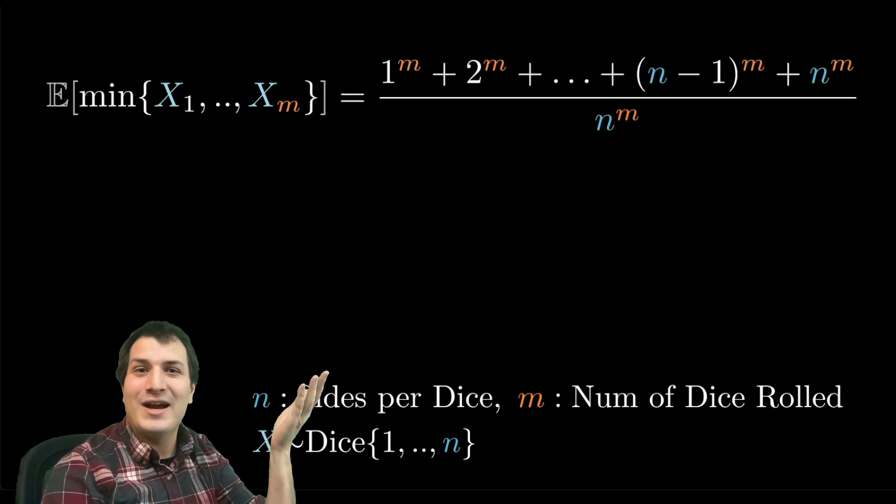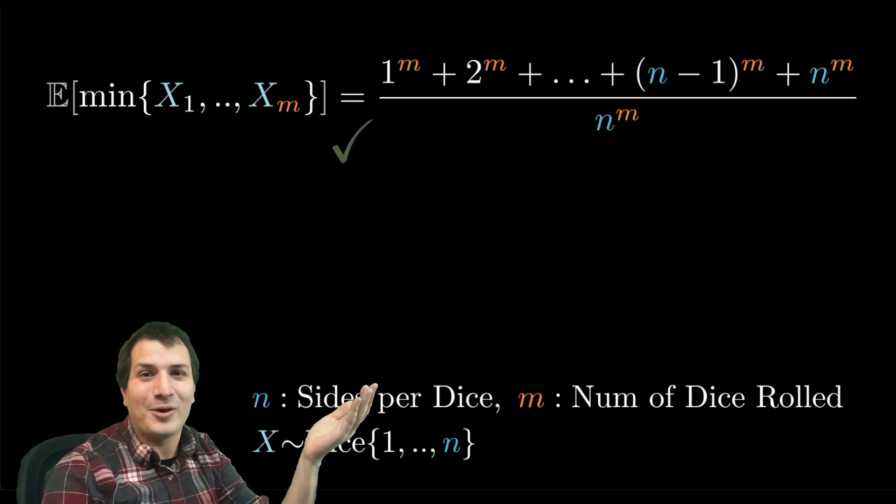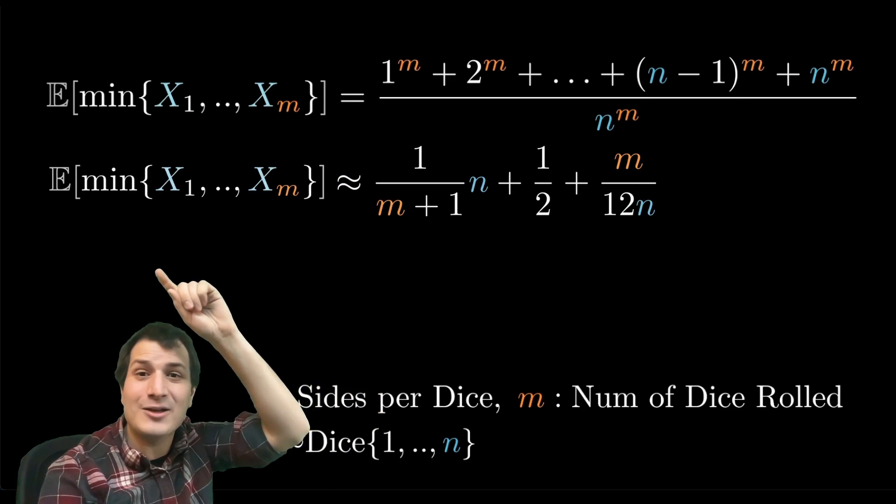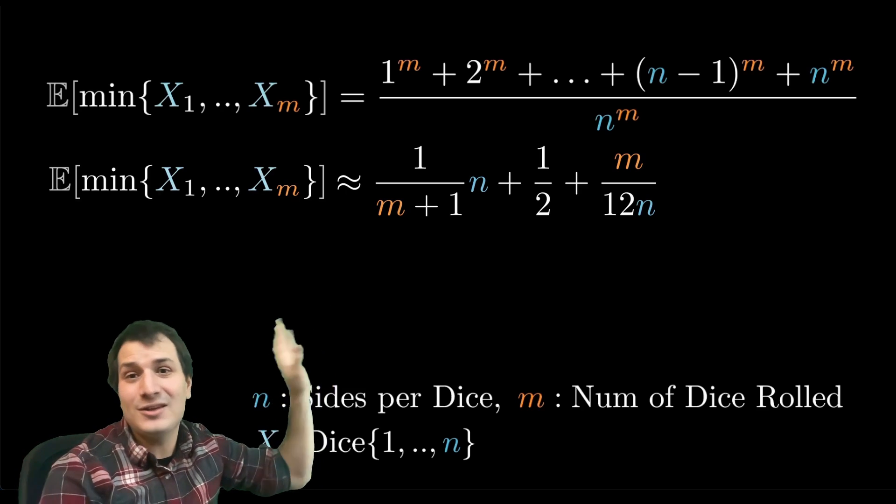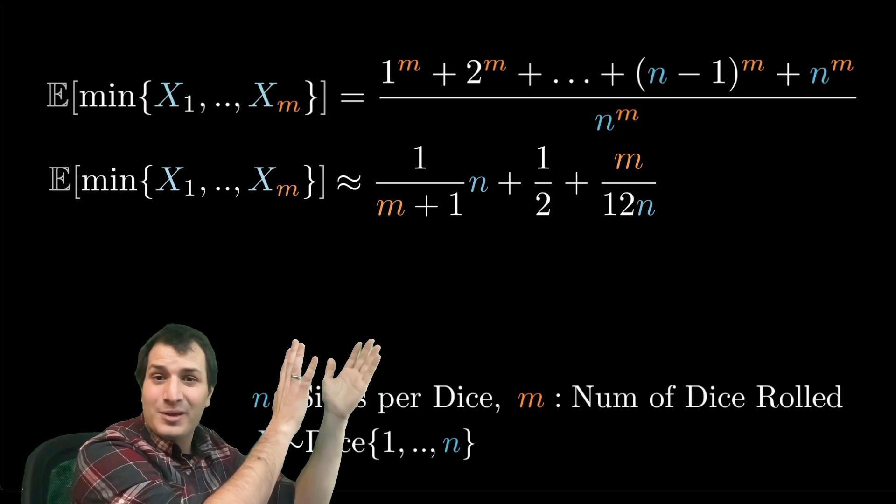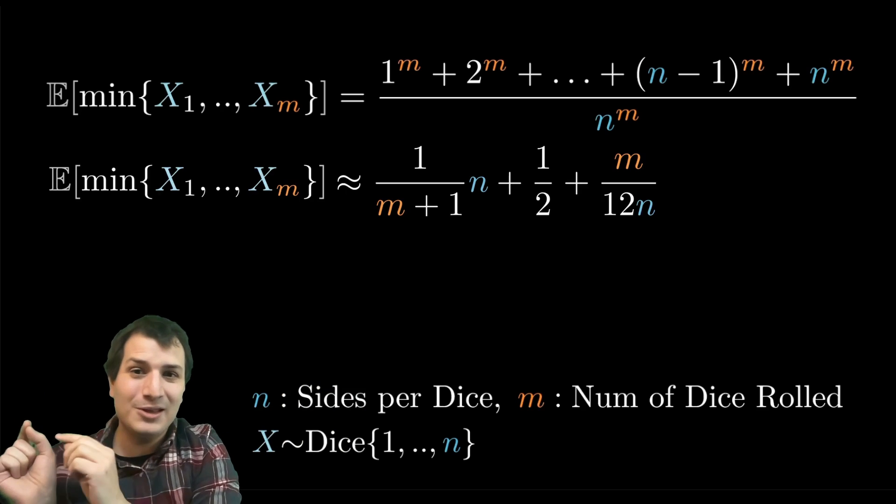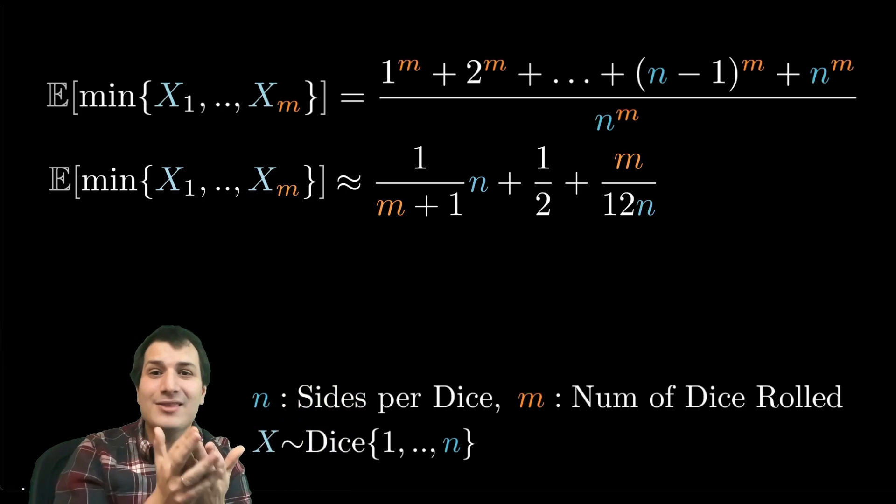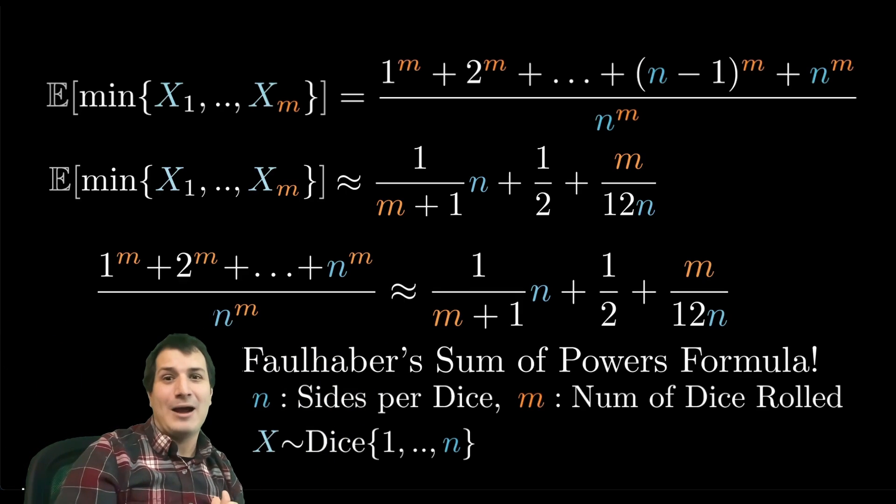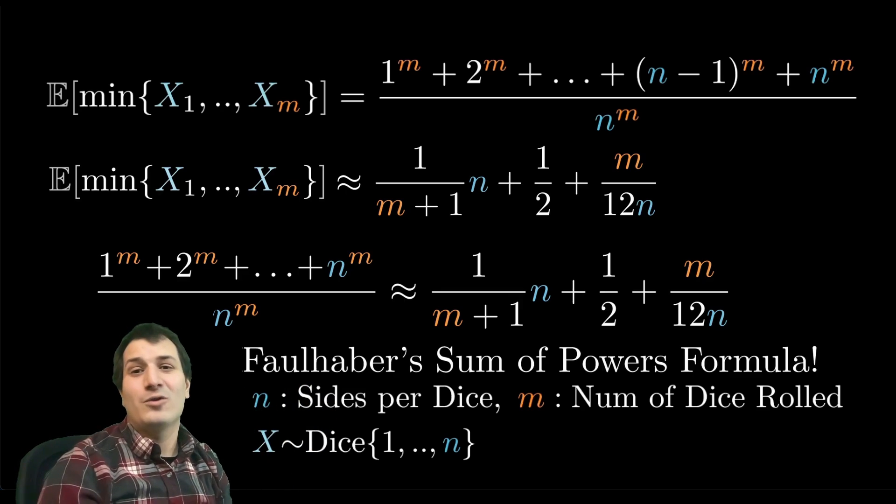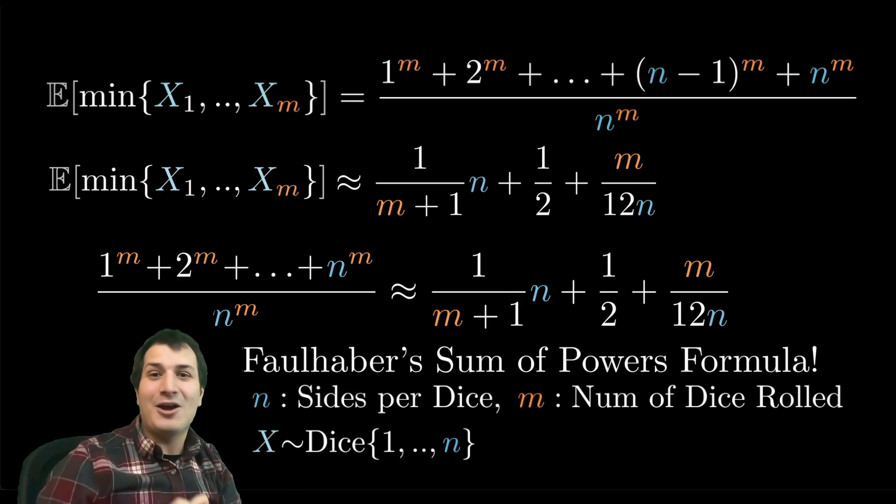We've got the formula. In a separate video, I found a really nice approximation for the expected value of the minimum of dice that has nothing to do with this. Because we have this formula which is an exactly equals to, and we have that other video with an approximately equals to, we can combine them to get an approximation for the sum of the powers. This is called Faulhaber's formula, and we have a really nice approximation for these sums of powers. So go check out that video if you want to see more.